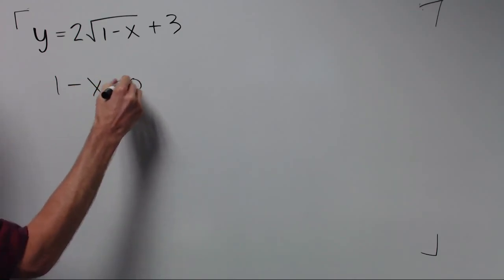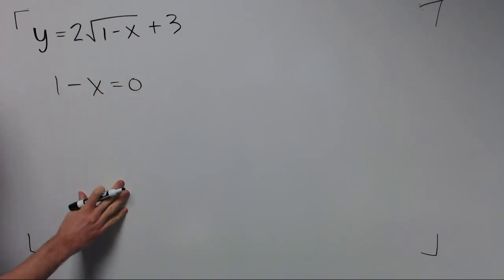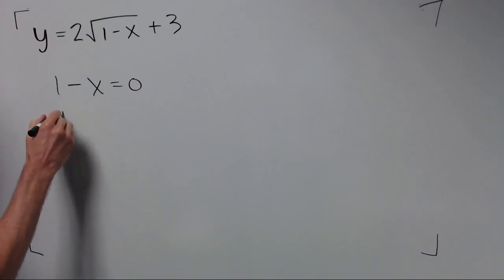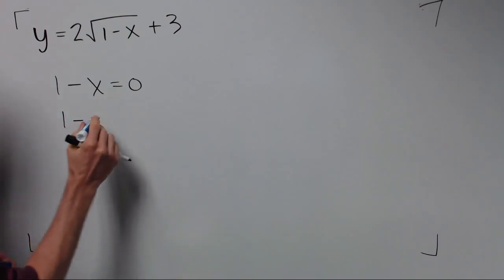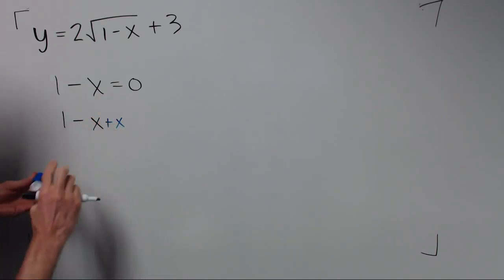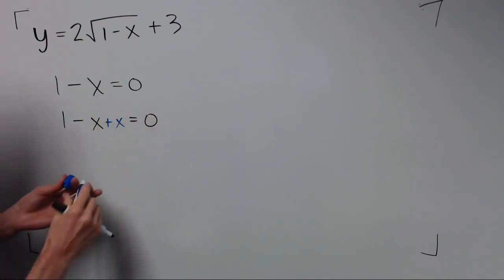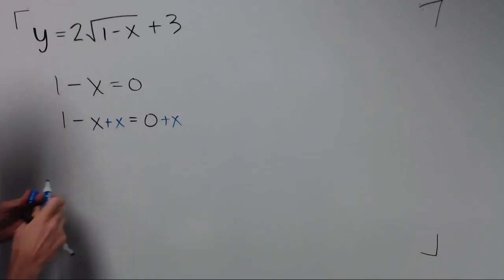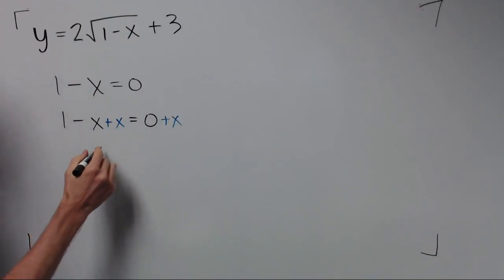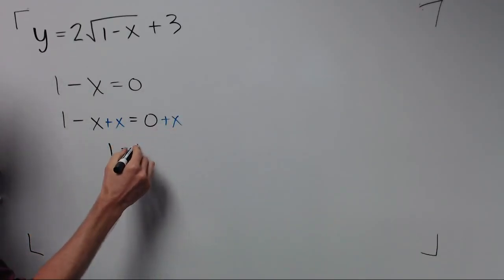If we set that equal to zero and solve, we can solve that by adding x to both sides. Negative x plus positive x is zero. Zero plus x is x.